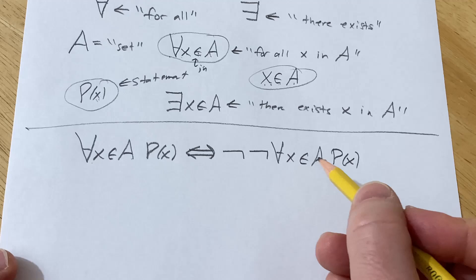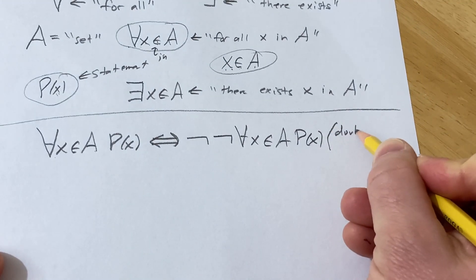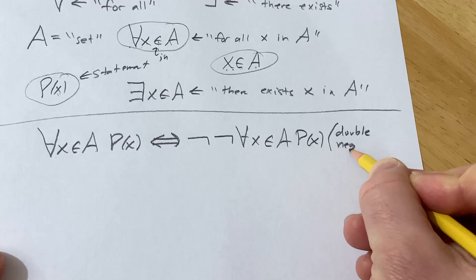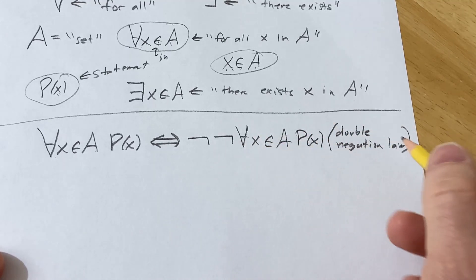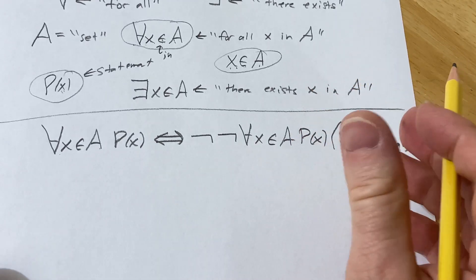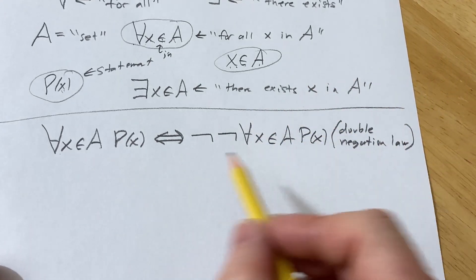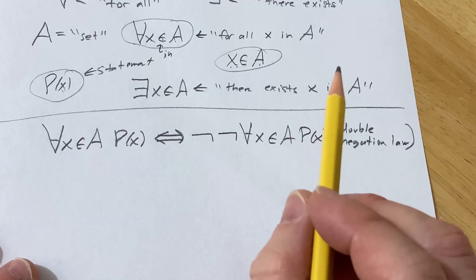In mathematics, people give this a fancy name. They call it the double negation law. All of these logic laws have rules and names in mathematics. And they're all described in the book that I was talking about before.